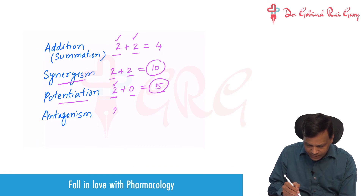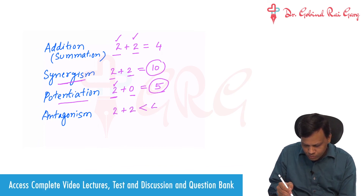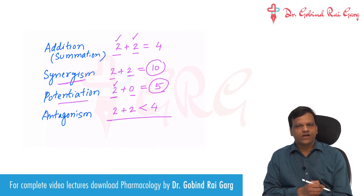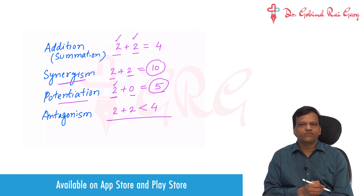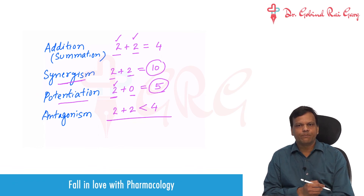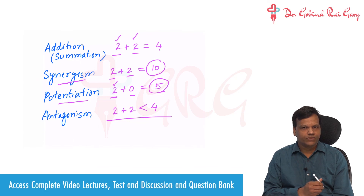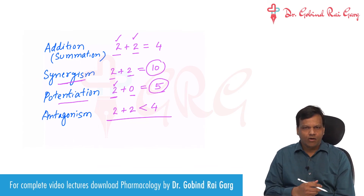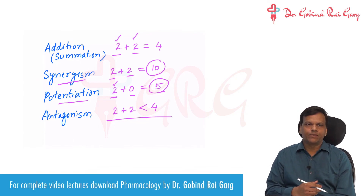Lastly, we have antagonism. When 2 plus 2 equals less than 4, it is antagonism. That means when we combine the two drugs, the combined effect is less than the simple additive effect. These are the four types of drug combinations that can occur.